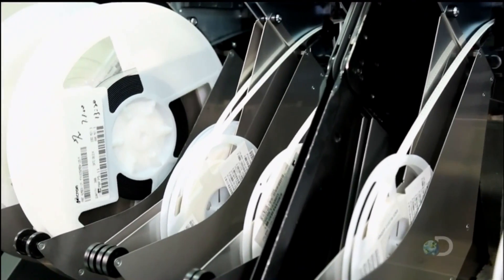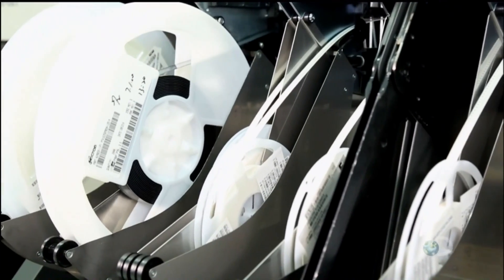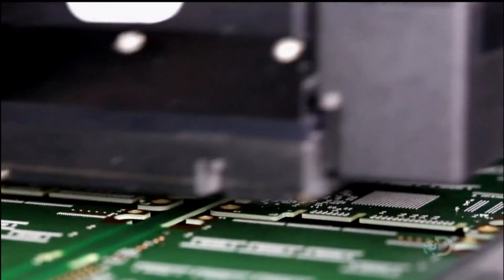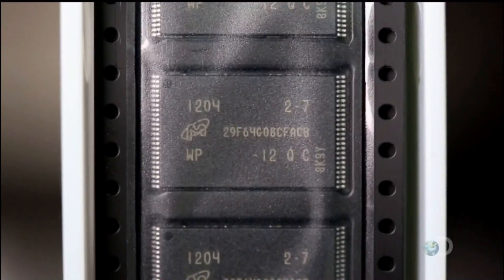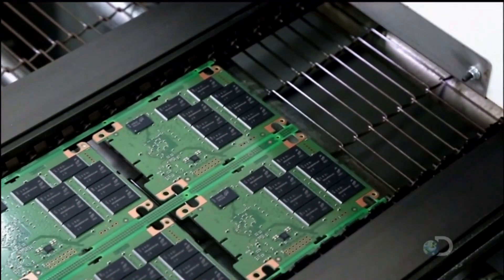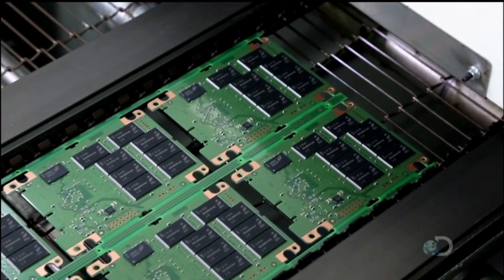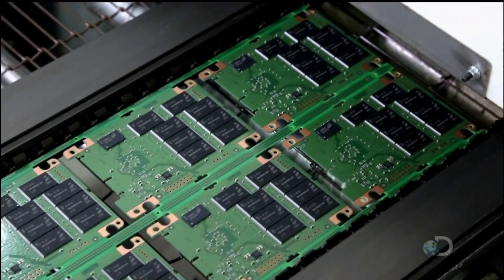As the boards exit the machine, a robotic arm picks off the components required for each drive from feeder spools and deposits them at their respective locations on the circuit board. This particular model has eight microchips, each able to store 64 gigabytes of data, giving the drive a capacity of 512 gigs.